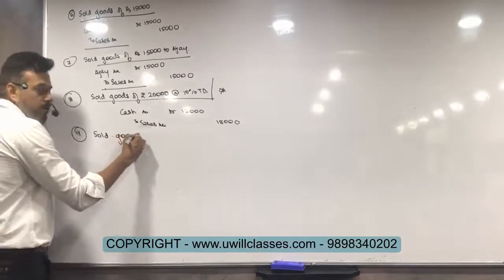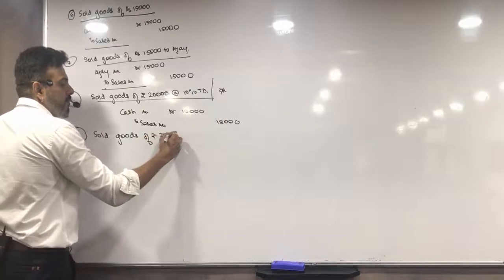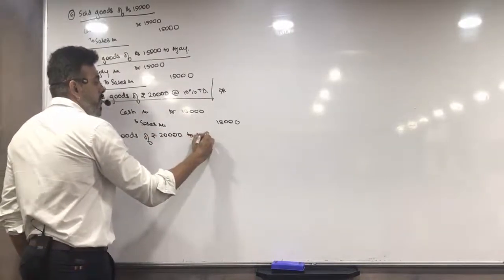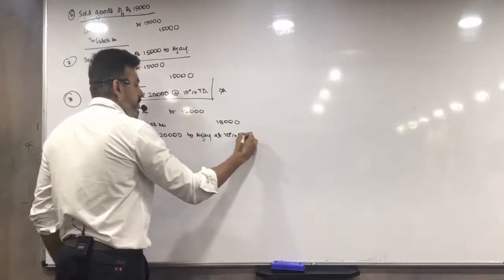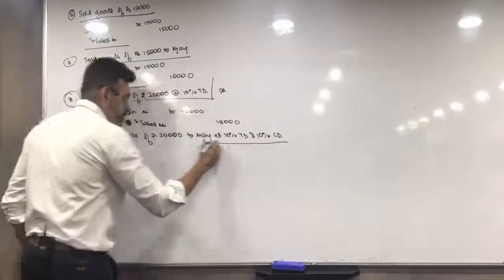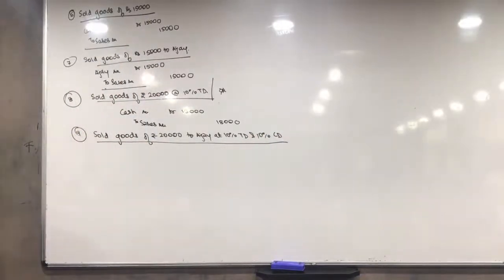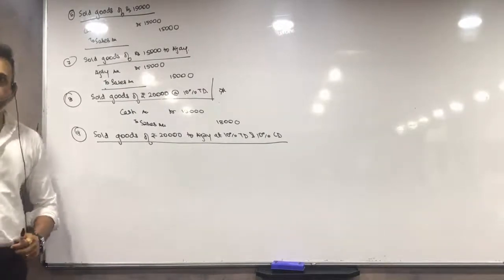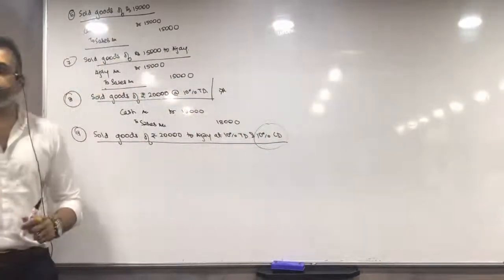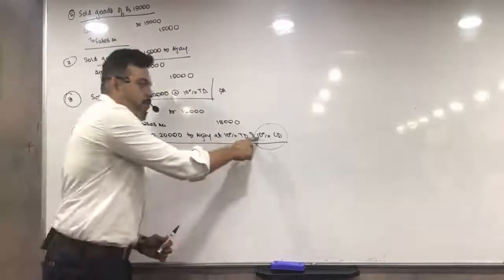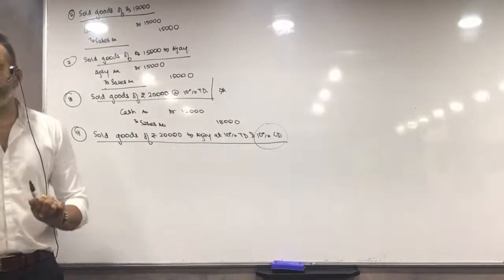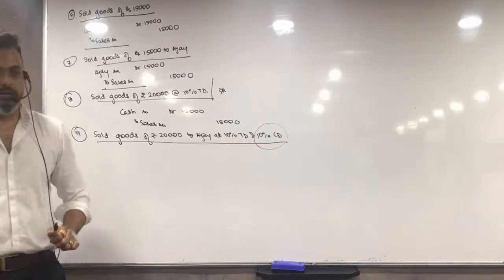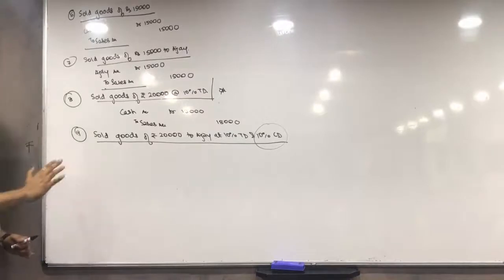Transaction 9: Sold goods of rupees 20,000 to Ajay at 10% trade discount and 10% cash discount. Is this a cash or credit transaction? Credit. Is cash coming in? No. You just have to ignore the cash discount terms for now — cash discount comes only when we are receiving money. Right now we are not receiving any money. It's a normal credit transaction, so Ajay account debit.